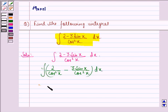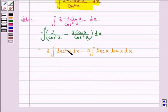This is equal to 2 into integral of secant square x dx minus 3 into integral of secant x tan x dx. This happens because sin x by cos square x is same as secant x tan x.